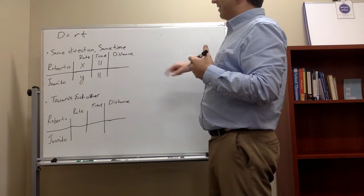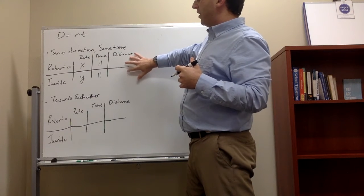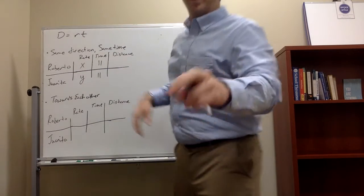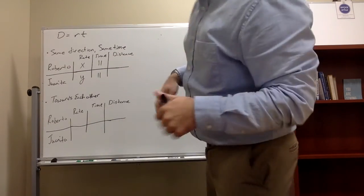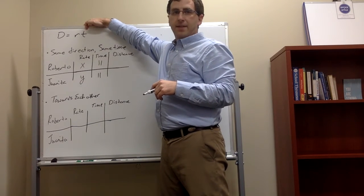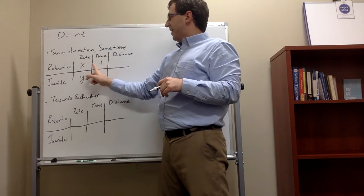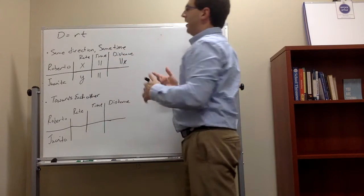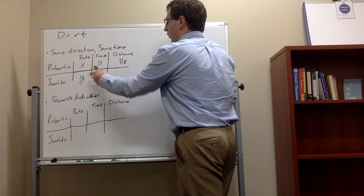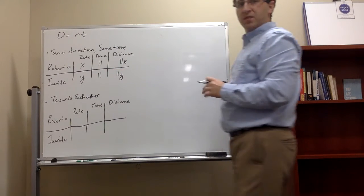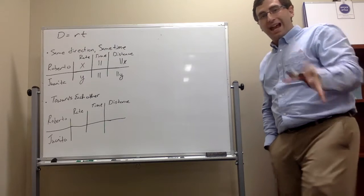Now the distance for Roberto and Juanita comes from the distance formula, d equals rt. That's your motion formula. Distance is rate times time, or your speed times time. So in this case, it would be x times 11, or 11x. Same thing for Juanita, y times 11, or just 11y. So now that we set up the tables, that's half the battle right there.